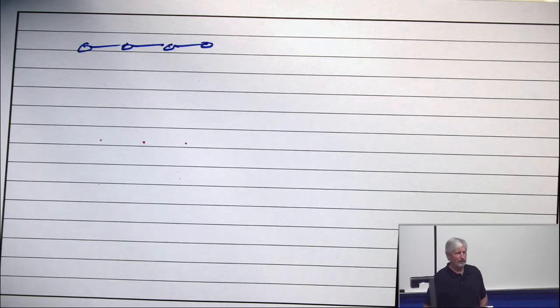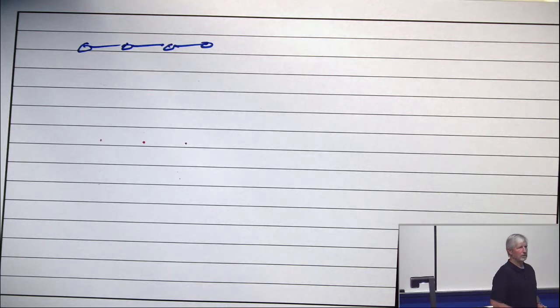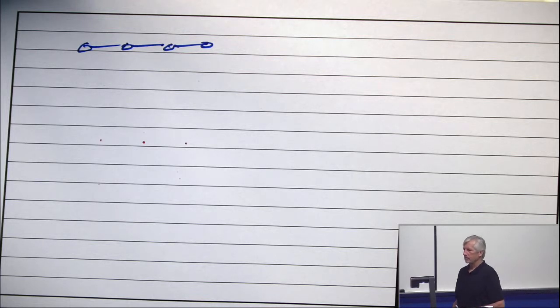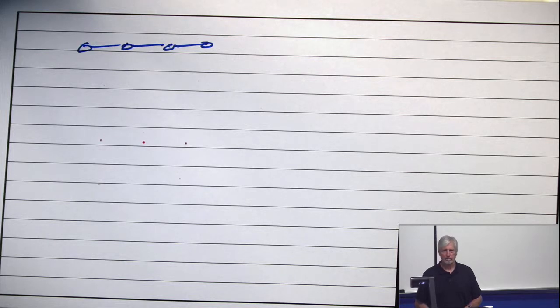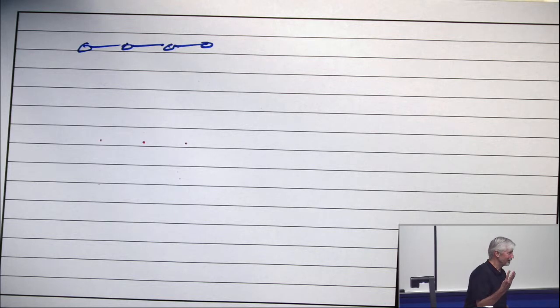suppose two persons play with that graph. One person builds the graph and the other one colors the graph. How many colors does it take for the color? We just did it. It takes three. It takes three.